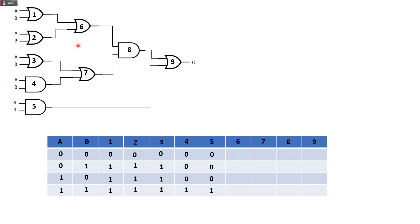Gate 6 is an OR gate, but this time the inputs come from gates 1 and 2 — not A and B. So: 0 or 0 is 0, then all the remaining are 1 since they are all 1s. Gate 7 is based on gates 3 and 4, and its gate type is OR. So: 0 or 0 is 0, 1 or 0 is 1, 1 or 0 is 1, and 1 or 1 is 1.